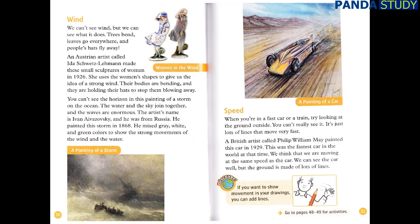Wind. We can't see wind, but we can see what it does. Trees bend, leaves go everywhere, and people's hats fly away. An Austrian artist called Ida Schwetzleman made these small sculptures of women in 1926. She uses the women's shapes to give us the idea of a strong wind. Their bodies are bending, and they are holding their hats to stop them blowing away. You can't see the horizon in this painting of a storm on the ocean. The water and the sky join together, and the waves are enormous. The artist's name is Ivan Aivazovsky, and he was from Russia. He painted this storm in 1868. He mixed gray, white, and green colors to show the strong movements of the wind and the water.